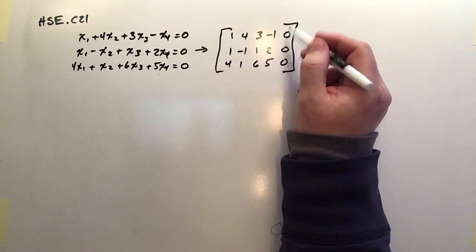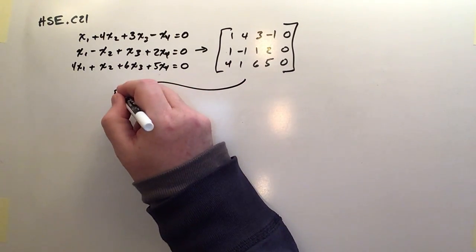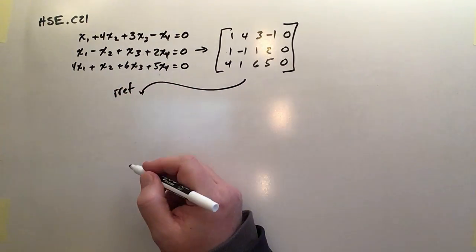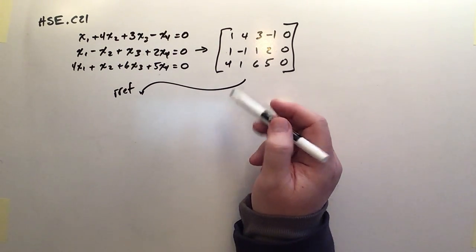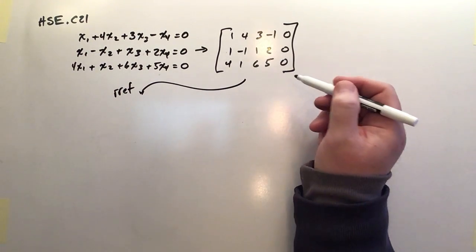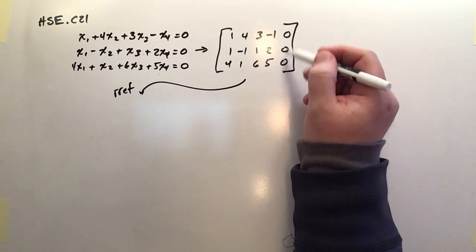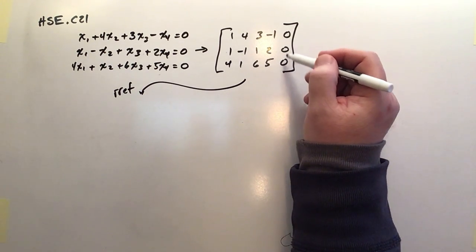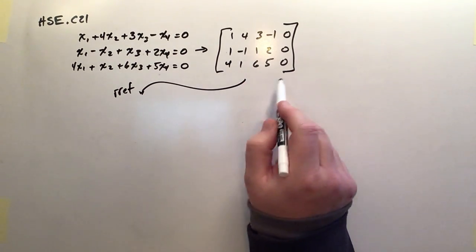We're going to sound like a broken record here. We now need the reduced row echelon form in order to determine what the solutions are to this system. And it's no different for a homogeneous system. You might think that it being homogeneous is going to mess things up, but not at all. Even though we won't really be producing solutions or answers over here, we'll still end up with relationships between the variables.